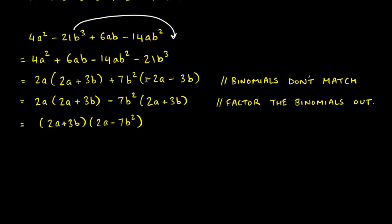As mentioned in the GCF video, if the positive term doesn't work, try the negative. If we factor out -7b² instead: -14ab² ÷ -7b² = 2a and -21b³ ÷ -7b² = 3b, because all signs inside flip, giving -7b²(2a + 3b). Now both groups share (2a + 3b). Factoring it out: from the first term, dividing out (2a + 3b) leaves 2a; from the second, it leaves -7b². The final answer is (2a + 3b)(2a - 7b²).